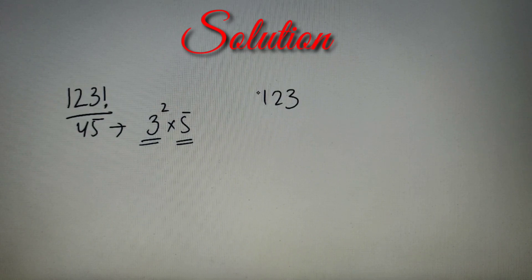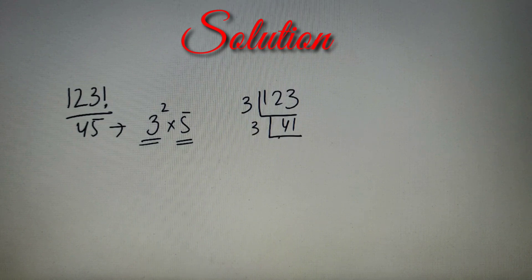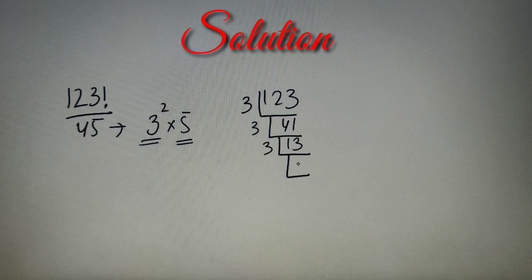Now let's first find the highest power of 3 in 123 factorial. The process is to continuously divide the number with the prime factor. 3 on dividing 123 will give us a result as 41. 41 on division with 3 will give us 13. 13 on division by 3 will give us 4, and lastly with 3 we'll get 1.